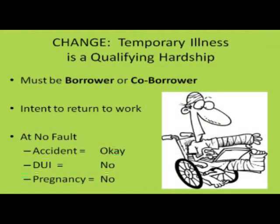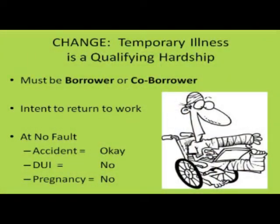Consider some examples: a person might be temporarily ill because they got into a car accident that was not their fault — they need to recover and will return to work. Maybe they're not getting paid while out of work, or the compensation they're receiving is at a lesser amount than their regular pay. So they're financially suffering, and that's why they have a qualifying hardship. Contrast that with driving under the influence of drugs or alcohol and smashing into somebody else — that would not be a qualifying temporary illness hardship.